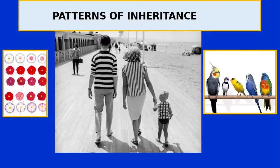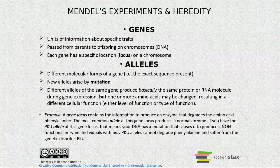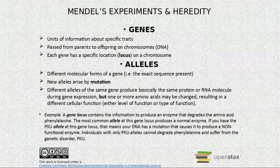Good morning. Today we're going to cover the pattern of inheritance. First of all, what are genes? Genes exist in your DNA — this is the initial information about a specific trait that exists in your DNA. Each gene has a specific location, which we call the locus, on chromosomes.